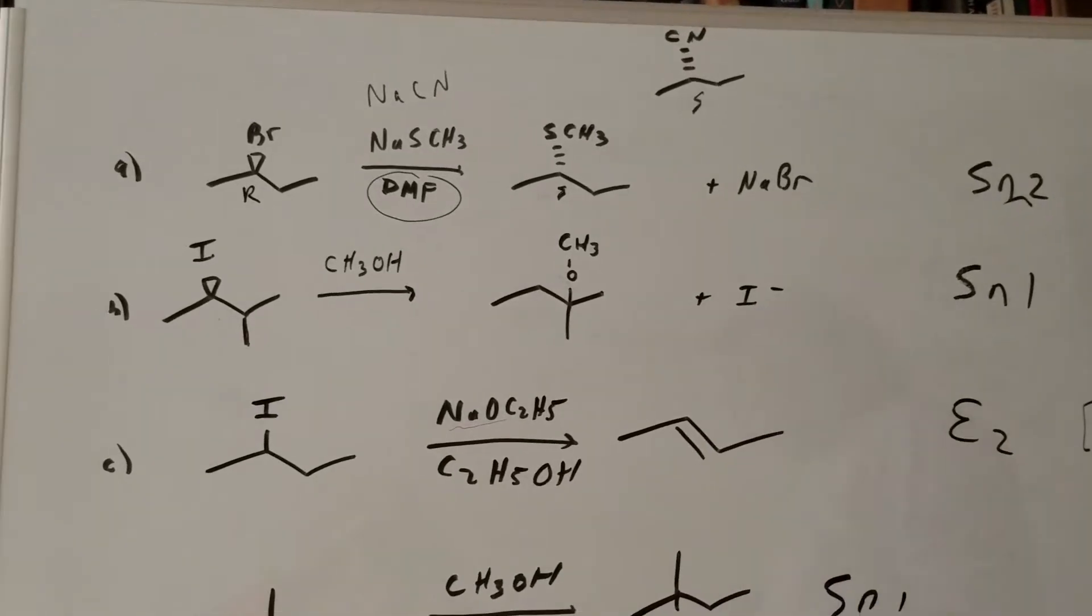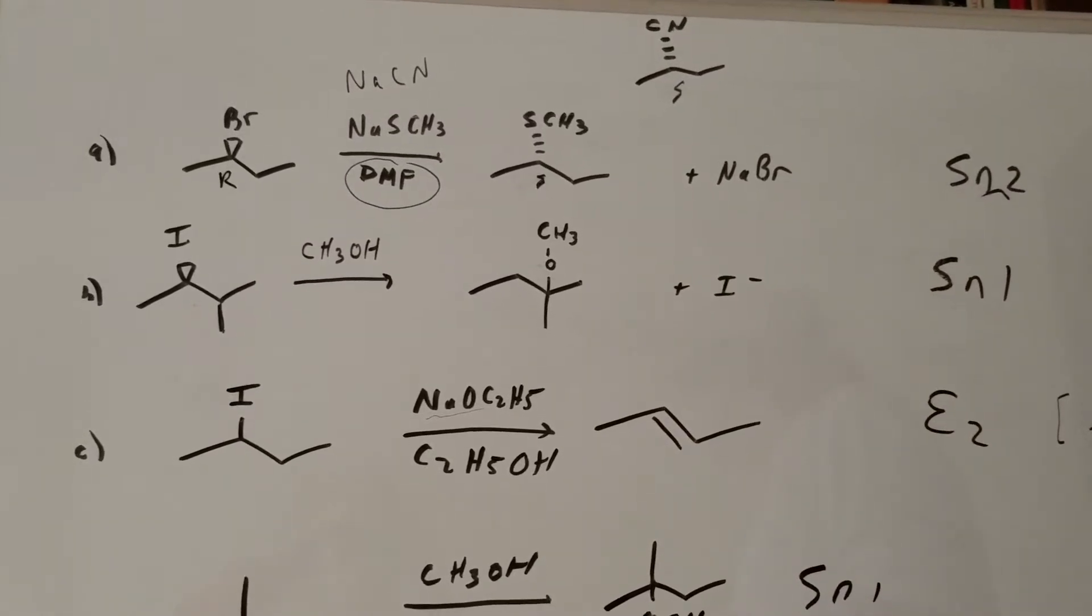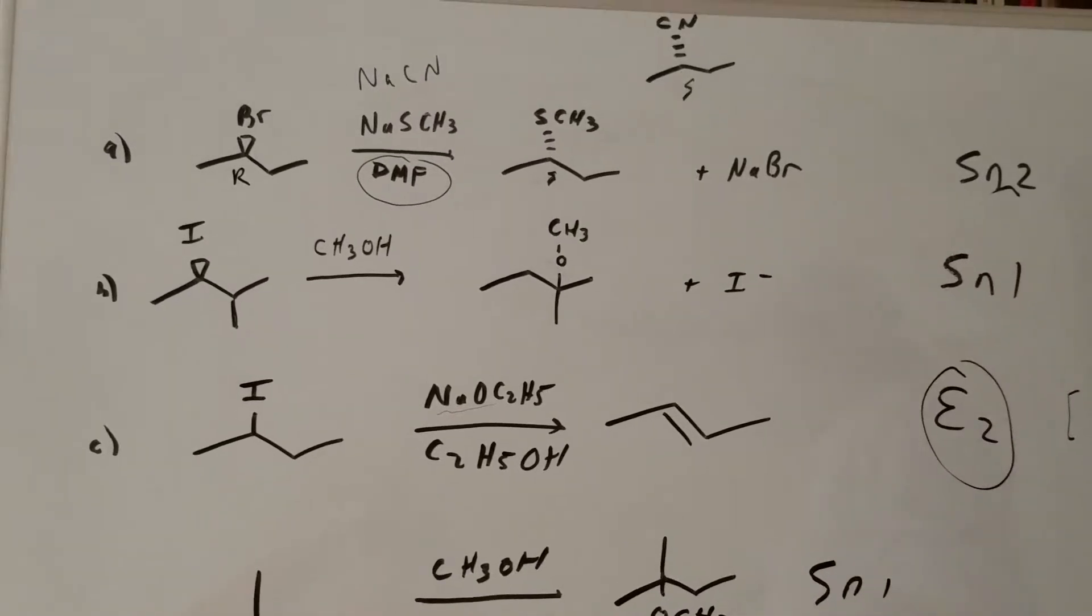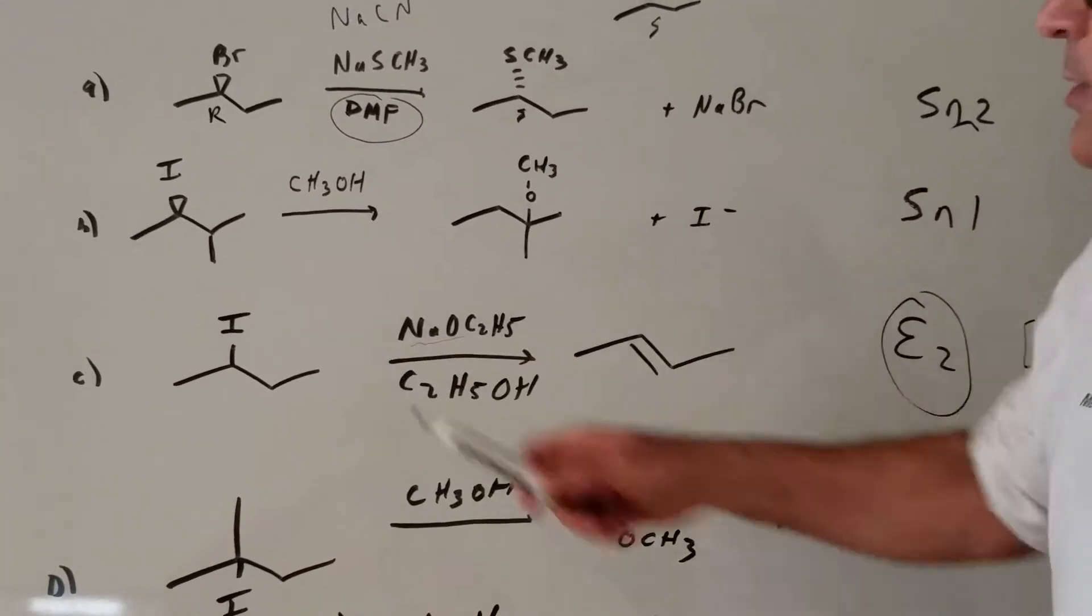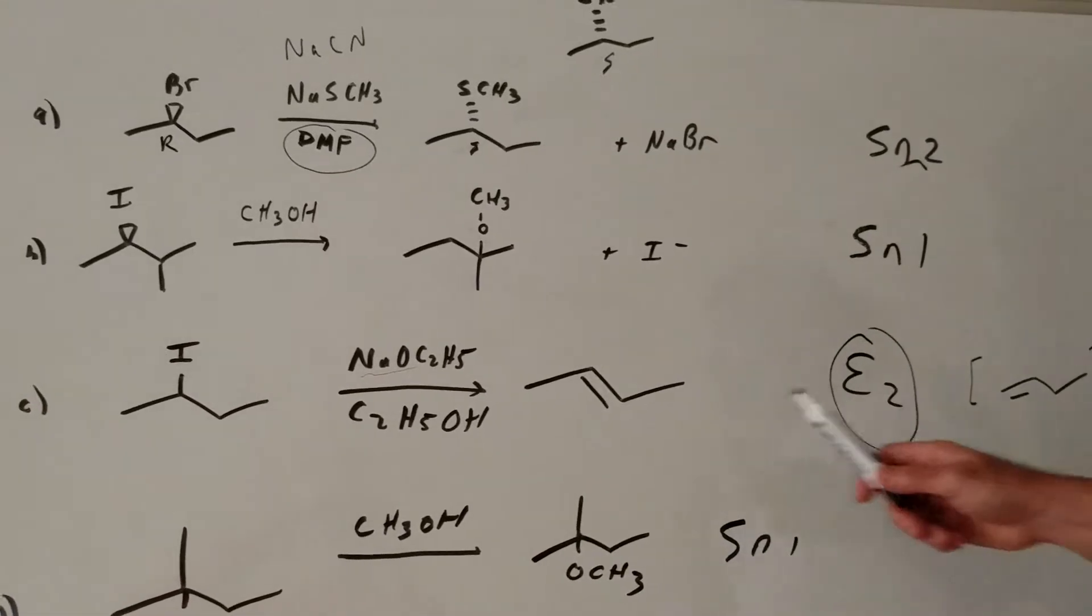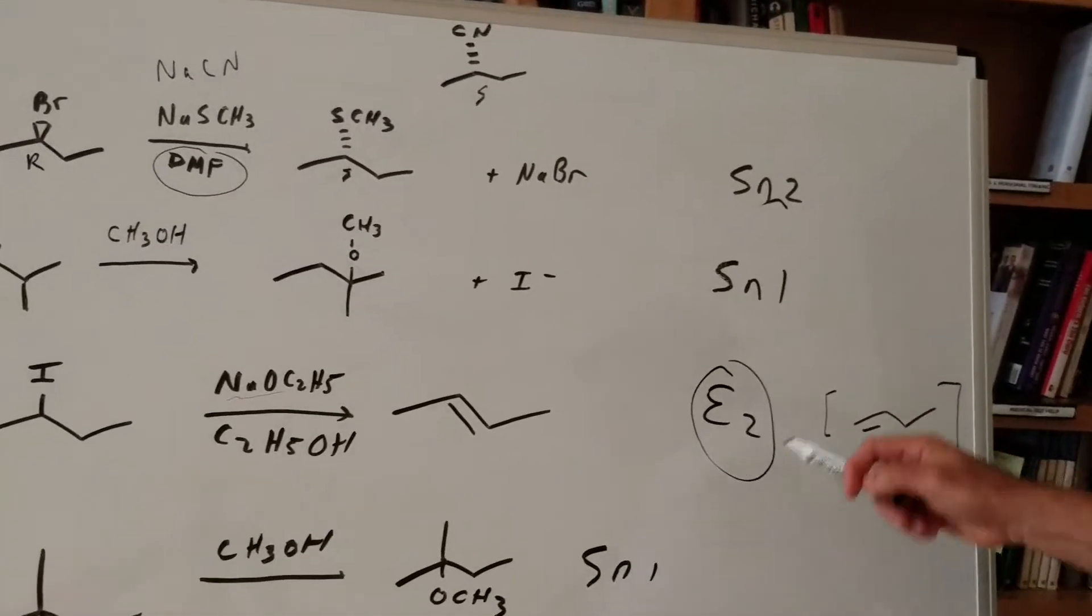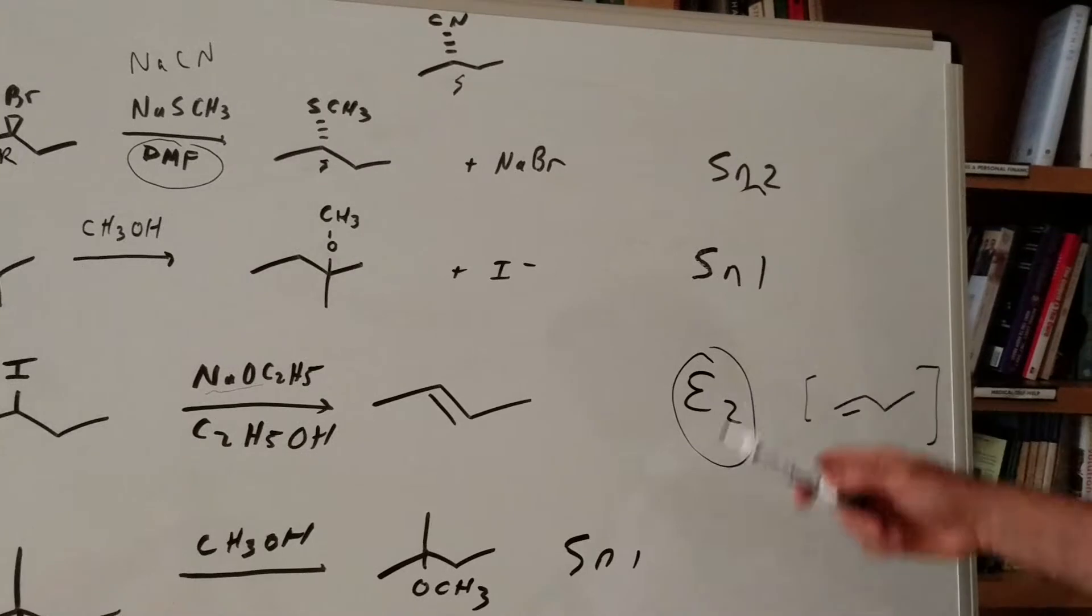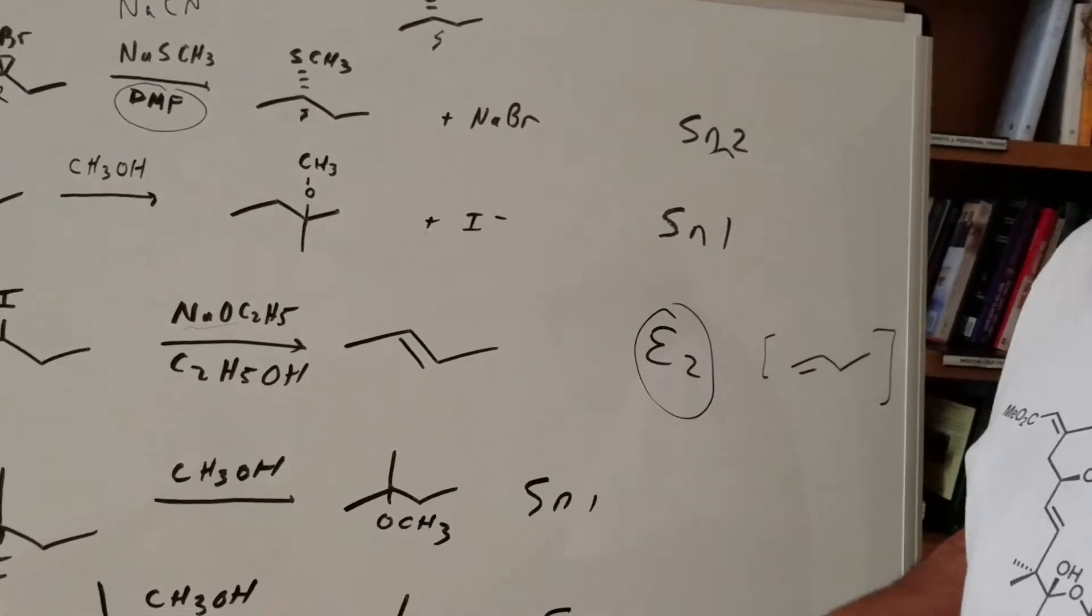As you can see what I've done here, I moved to the inside to form the most substituted alkene. And this is what we call the E2-Zaitsev product. The most substituted alkene is the more stable alkene. If the base was bigger and bulkier, you would have got what we call the E2-Hofmann product. This would have been the E2-Hofmann product if you would have treated it with something like t-butoxide or DBU.